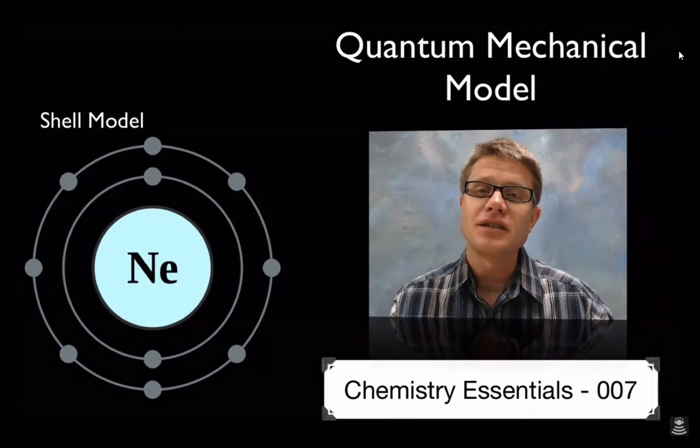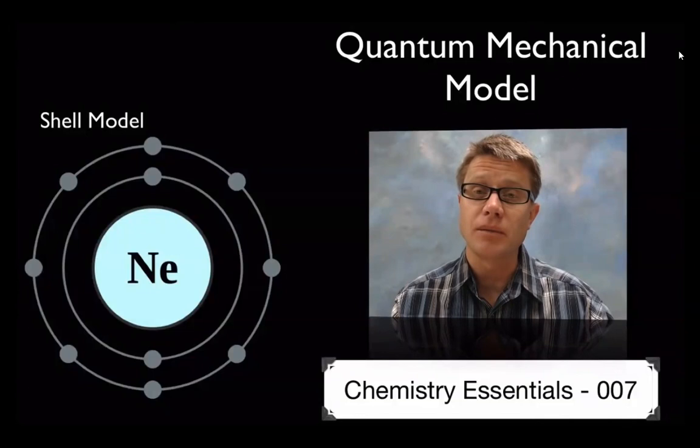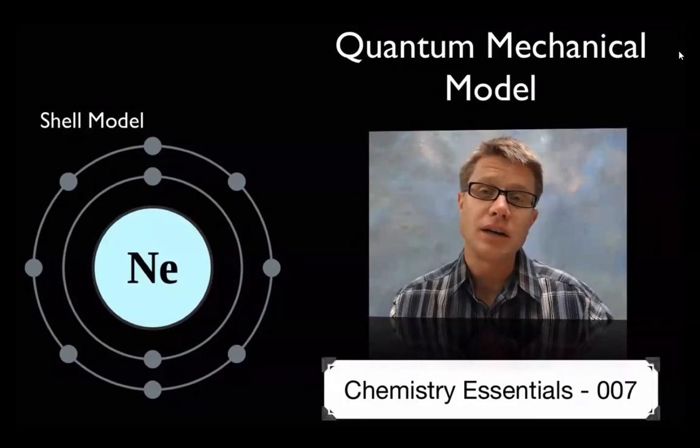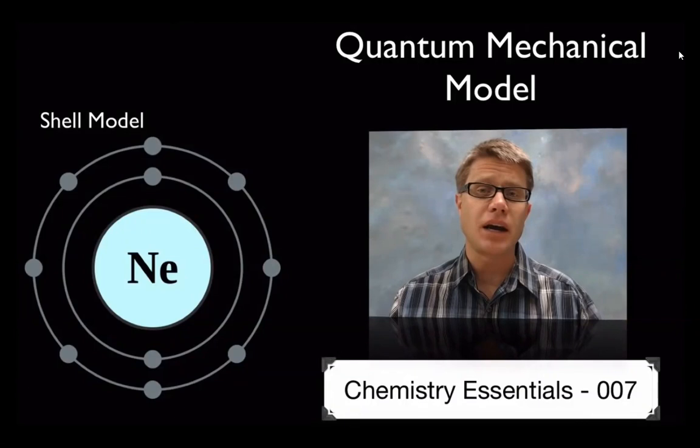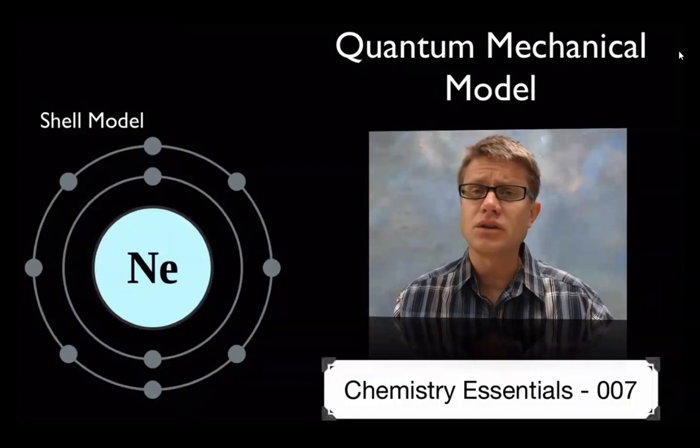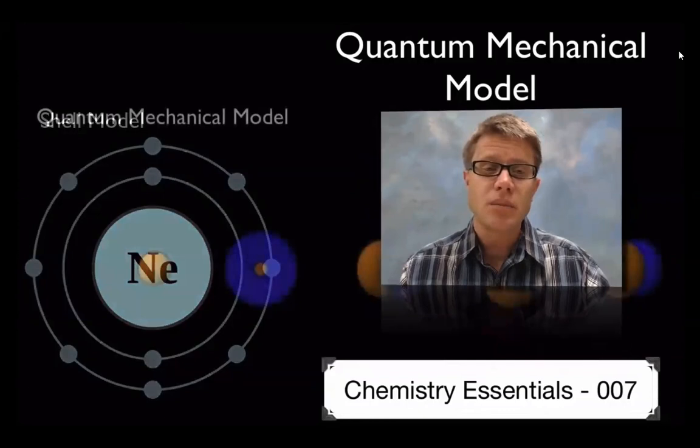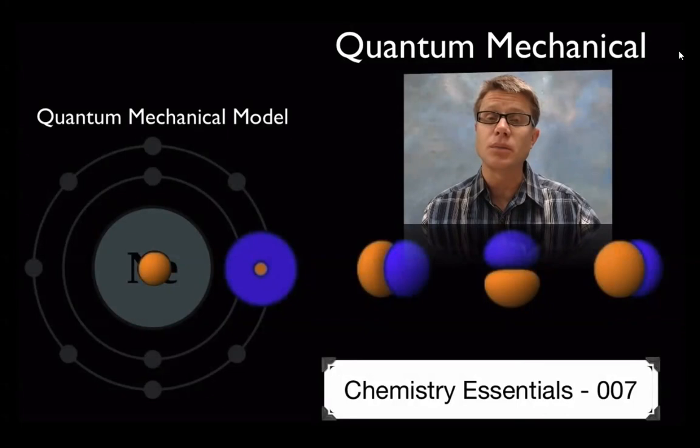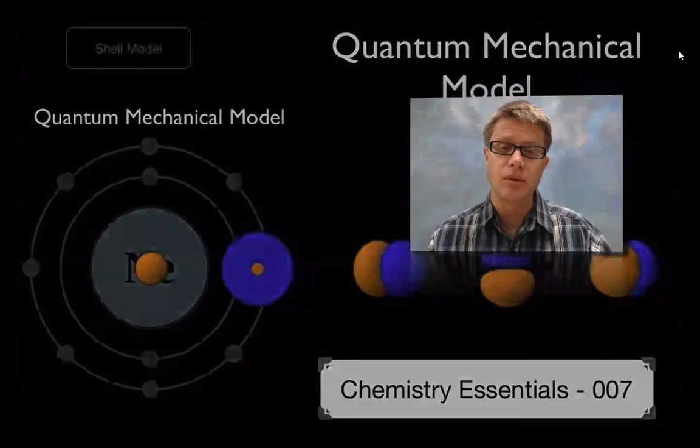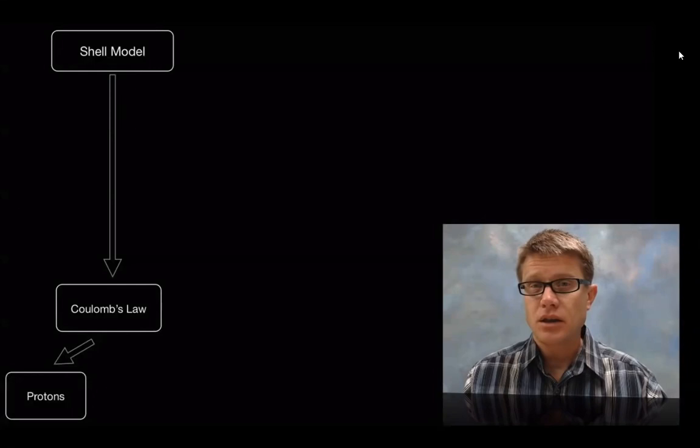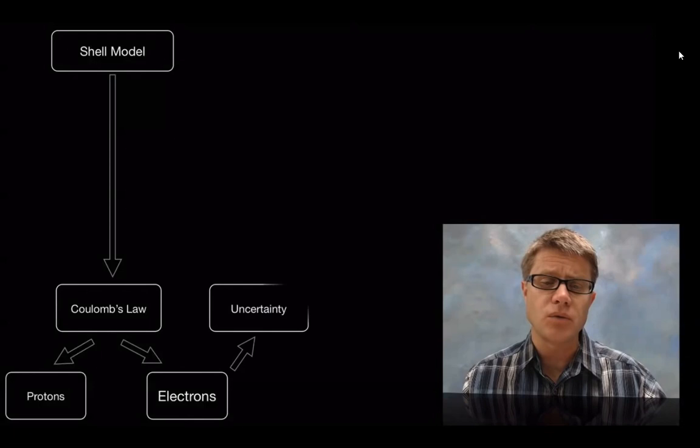Hi, it's Paul Anderson, and this is Chemistry Essentials video 007. It gets on the quantum mechanical model. In other words, it's going to be our current model of what an atom looks like. Before we had this quantum mechanical model, we had what was called a shell diagram. And so, when you look at neon, neon had two electrons in the first shell, and then it would have eight electrons in the next shell. And we figure that out by looking at spectral data. And so, what we've discovered since then is uncertainty in those electrons and a little bit more of the characteristics of electrons. And so, this has kind of been replaced with the quantum mechanical model.